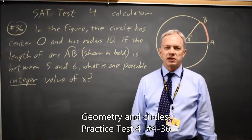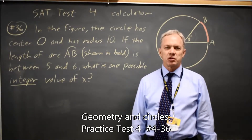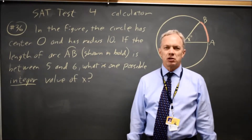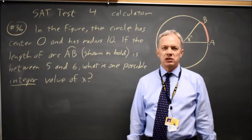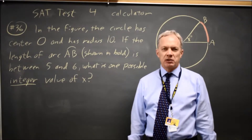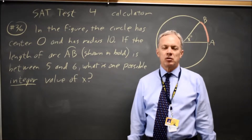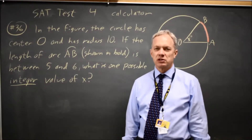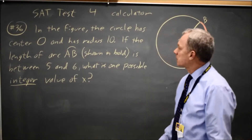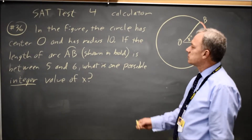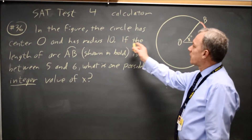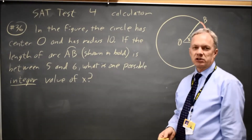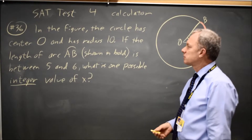This is SAT test 4, calculator question number 36. College Board is asking about circles. They will usually ask about the equation of a circle, and they will also usually ask about either the area or the length of arc along the circumference of a circle. And in this case, they're asking about the angle corresponding to a length of arc along the circumference.